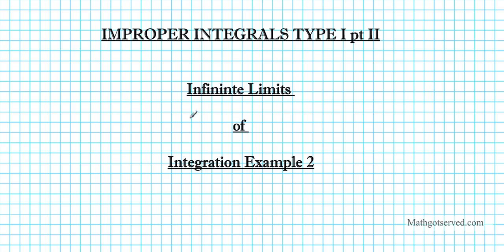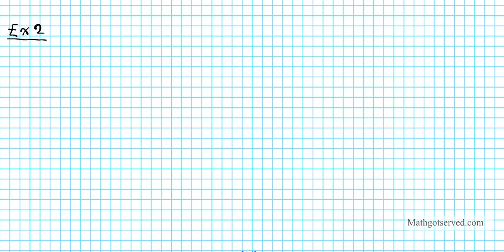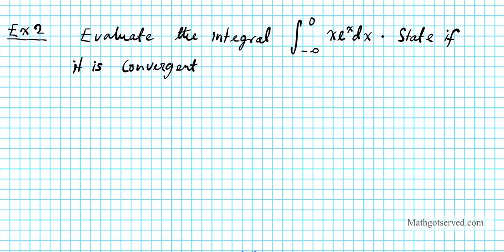Good day students, welcome to part 2 of Improper Integrals where we're going to be evaluating integrals with infinite limits of integration. The example we're going to be looking at today is example 2, a continuation of the last example. Evaluate the integral from negative infinity to 0 of x e to the x dx. State if it is convergent or divergent.